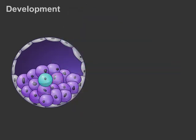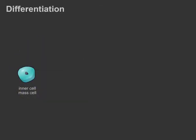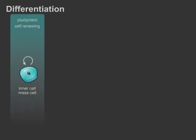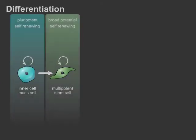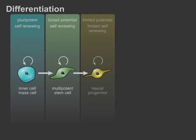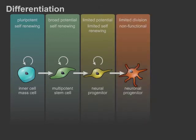The process by which less specialized cells become increasingly specialized is called cell differentiation. During development, pluripotent inner cell mass cells give rise to multipotent stem cells that are more committed to specific lineages. These multipotent stem cells then give rise to progenitor cells, which have limited potential and self-renewal.